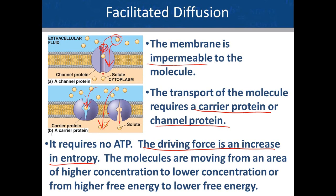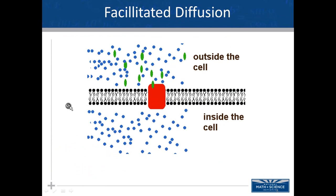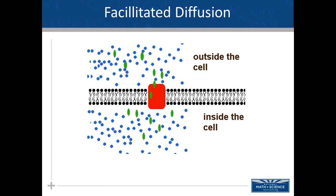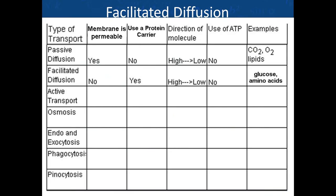That is facilitated diffusion. The animation shows molecules moving from higher to lower concentration down a concentration gradient — facilitated because a carrier molecule is required. Summary: is the membrane permeable to the molecule? No. Do we need a carrier molecule? Yes. Direction is high to low. Do we need ATP? No. Examples include glucose and certain amino acids. Passive diffusion and facilitated diffusion are both examples of passive transport because ATP is not needed to move the molecules.